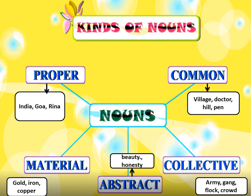Kinds of nouns: there are five kinds — proper noun, common noun, collective noun, abstract noun, and material noun.